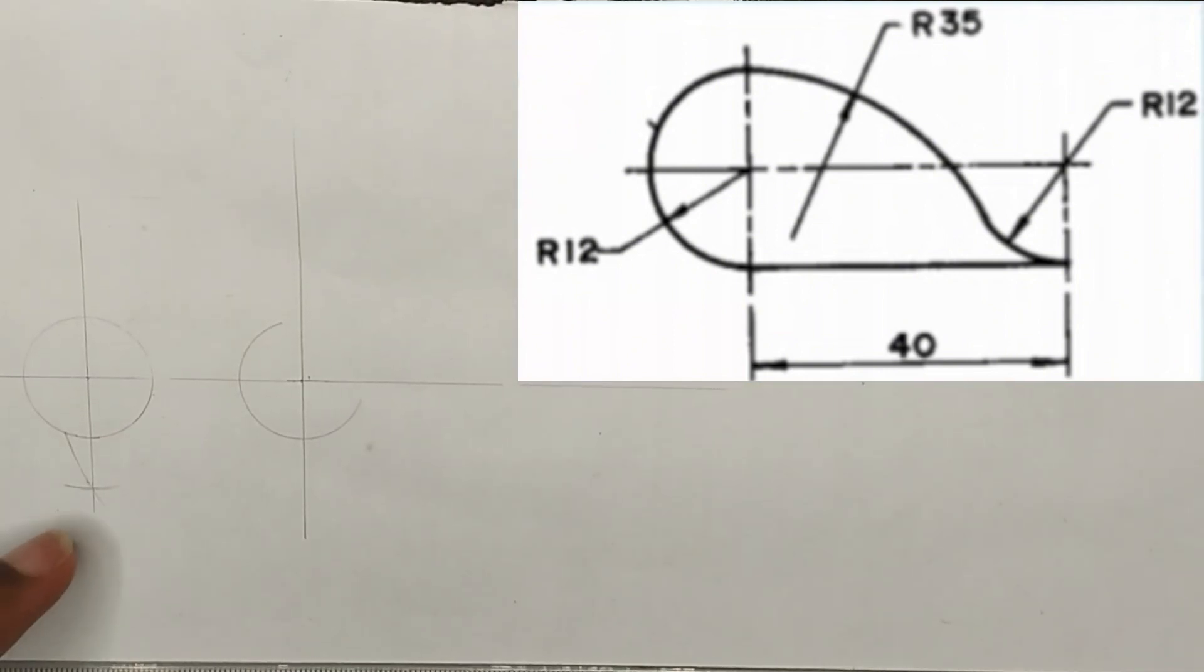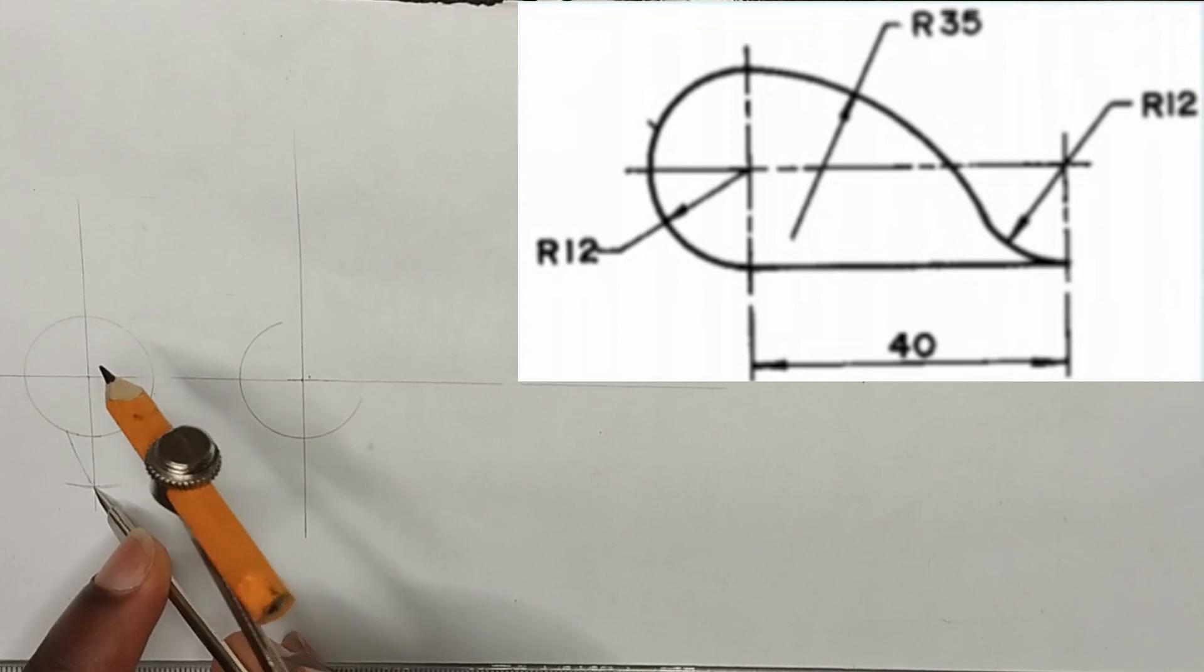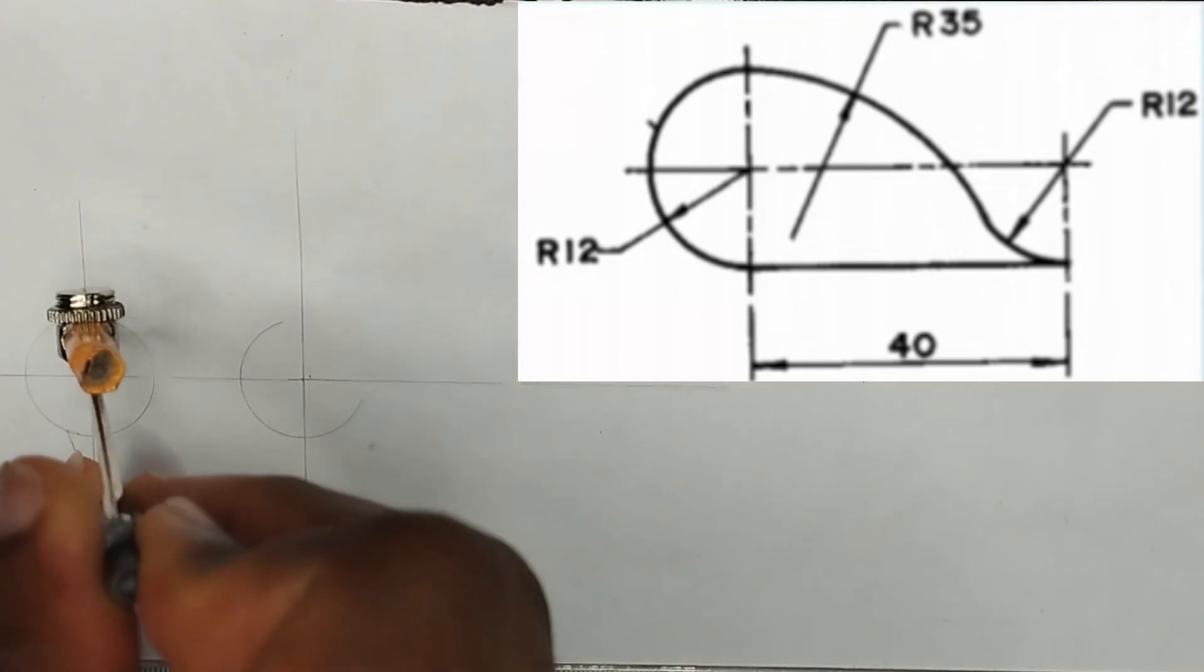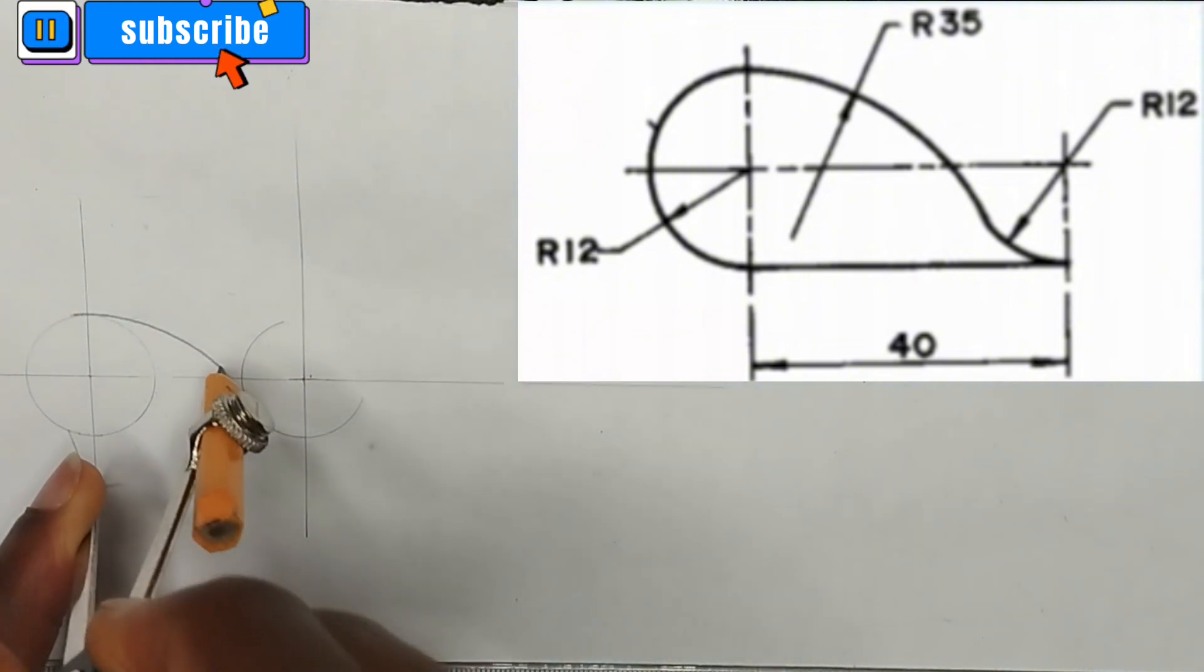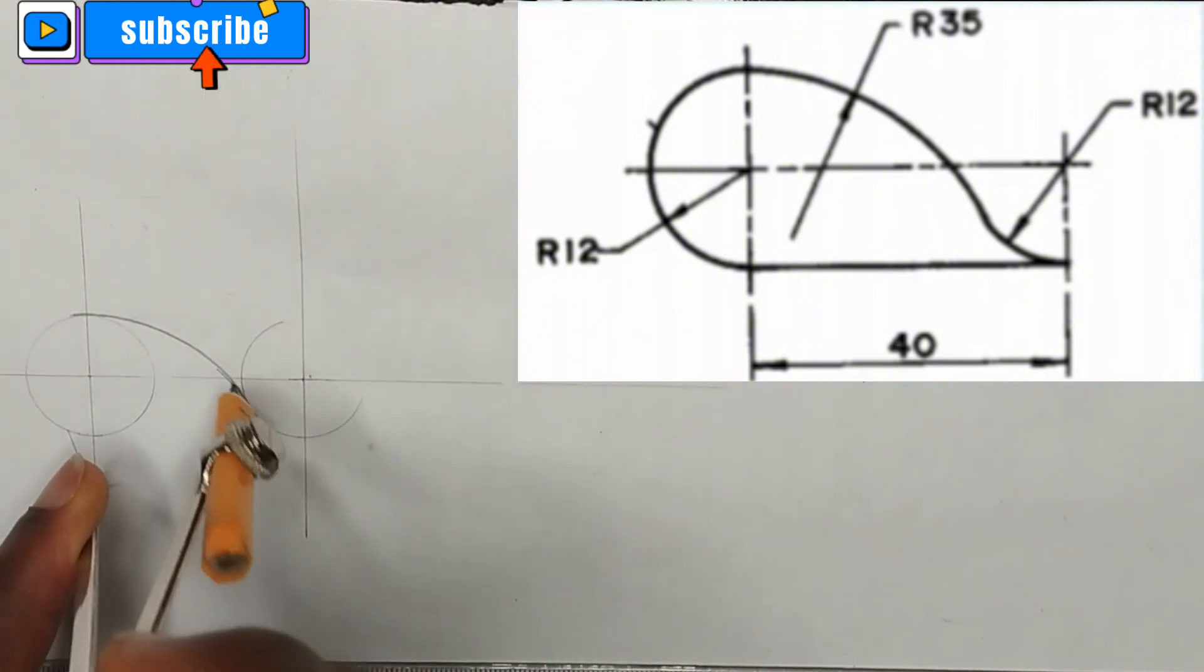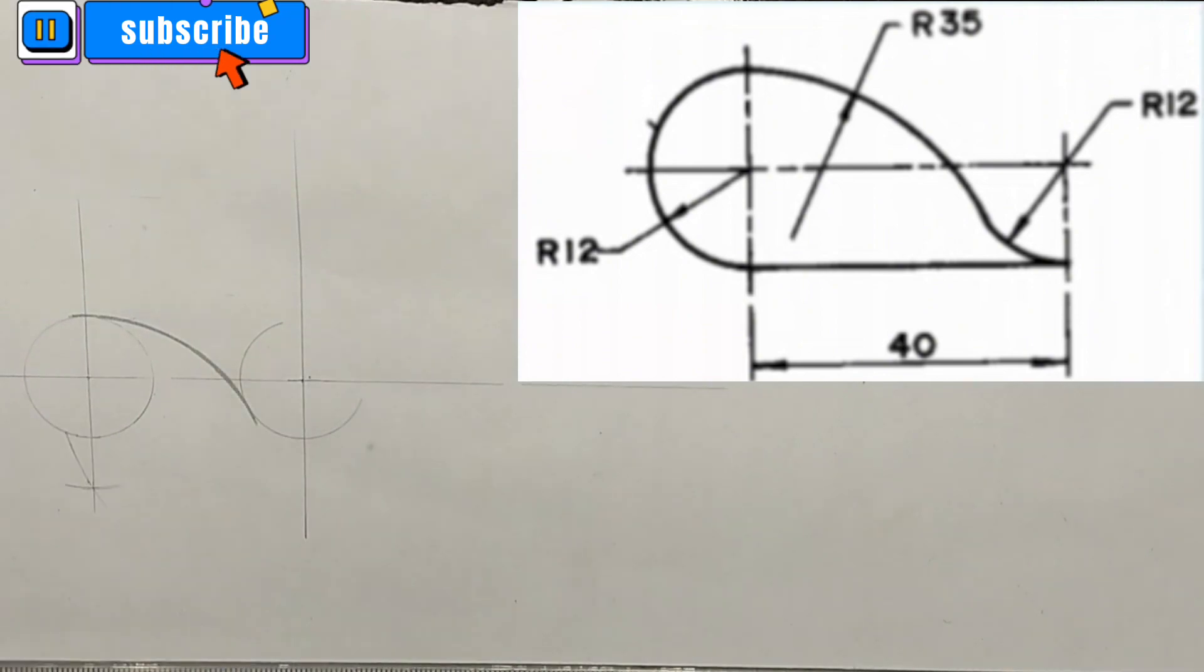So, the point at which these two arcs meet each other, I'm going to measure 35 mm on my compass like this. 35 mm on my compass then place it at this point at which the two arcs which we have drawn meet each other. Then from this particular place, I'm going to draw like this to this place like this.